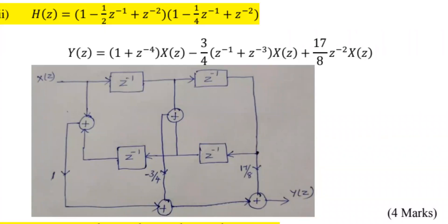H of Z equals 1 minus 1 by 2 Z power minus 1, plus Z power minus 2, into minus 1 by 4, Z power minus 1 plus Z power minus 2. If you see this expression, it is multiplied by these two — it is multiplied by two samples. First we have to multiply these two: 1 into 1, then 1 into minus 1 by 2 Z power minus 1 into this one.